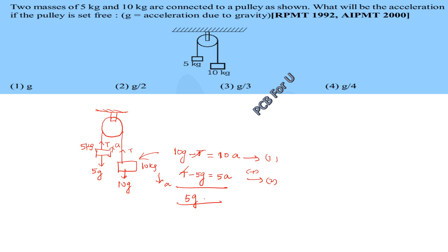5g is equal to 15a, so 15a is equal to 5g. A is equal to 5 by 15 into g, 1 by 3, so g by 3. So option 3, g by 3, is the correct option.